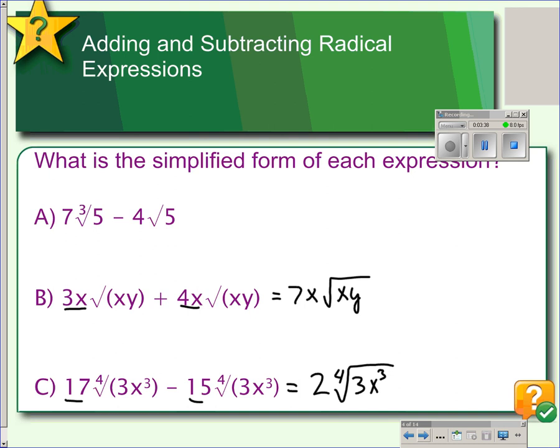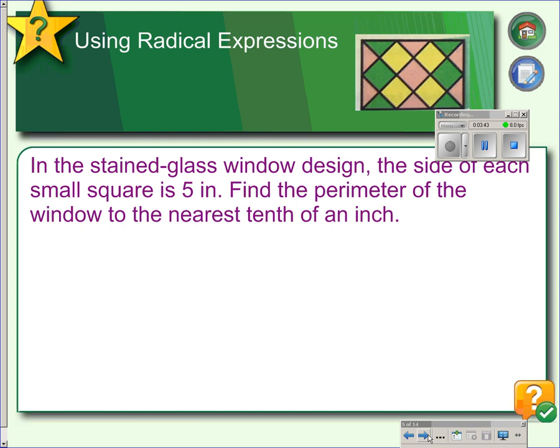Okay, that's adding and subtracting radical expressions. So, here's an application to it. If we have a stained glass window where the side of each of the small squares is 5 inches. We're talking about a side right here being 5 inches. We want to know how far it is around the outside of this window. So, we're going to have to use some geometry to figure out if this is 5 and this is 5, then what is the distance across.